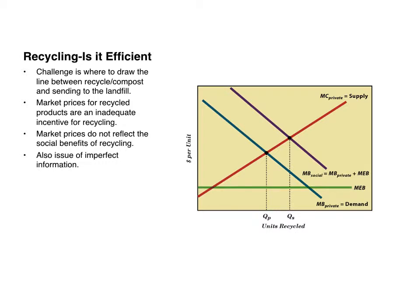There's also the issue of imperfect information, because people do not necessarily know the harm caused to the environment and society by throwing away paper, cans, or bottles. A synthesis of 67 empirical studies on recycling behavior in 1995 found that consumer knowledge was one of the strongest predictors of recycling. Recycling rates in Pensacola, Florida tripled between 2010 and 2012 after an ambitious education campaign. So market failure from recycling can result from both imperfect information and externalities.